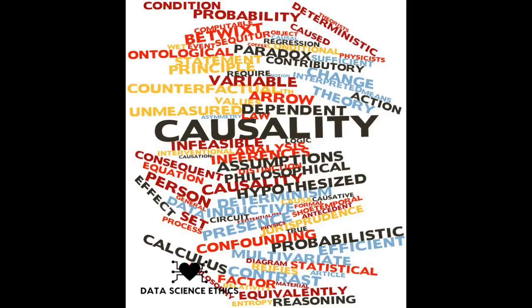Welcome to the Data Science Ethics podcast. This is Lexi, and today we're talking about proxy variables. Proxy variables are data points that are used in place of other information that is either impossible or impractical to measure.